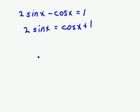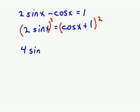The idea is to square both sides. If I square the left hand side, remember I have to square the 2 and the sine x, so I get 4 sine squared x.